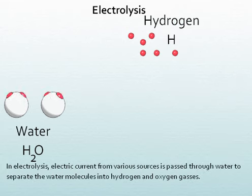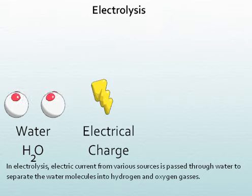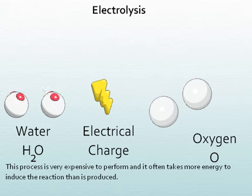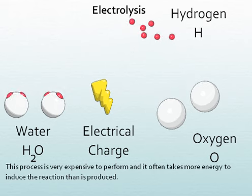In electrolysis, electric current from various sources is passed through water to separate the water molecules into hydrogen and oxygen gases. This process is very expensive to perform and often takes more energy to induce the reaction than is produced.